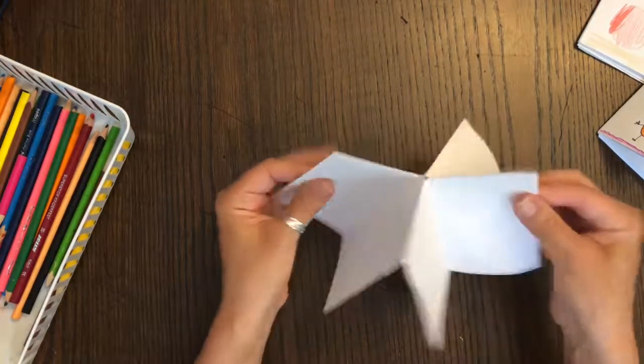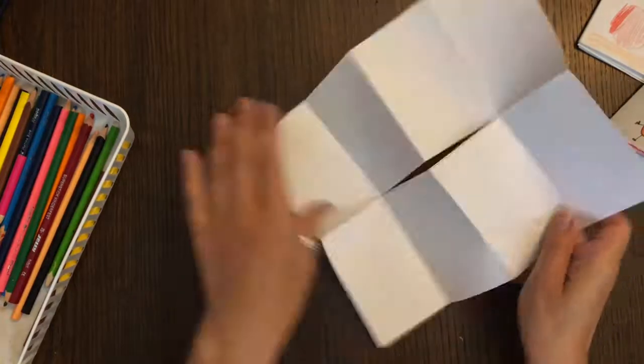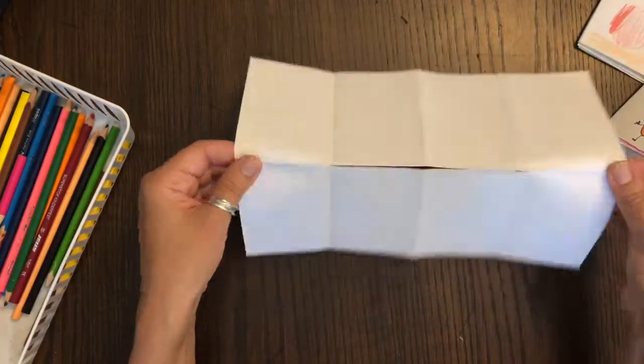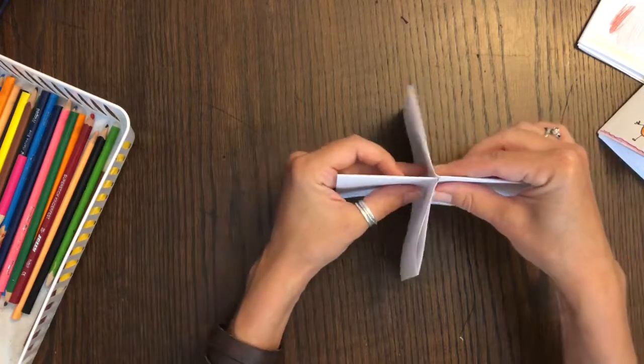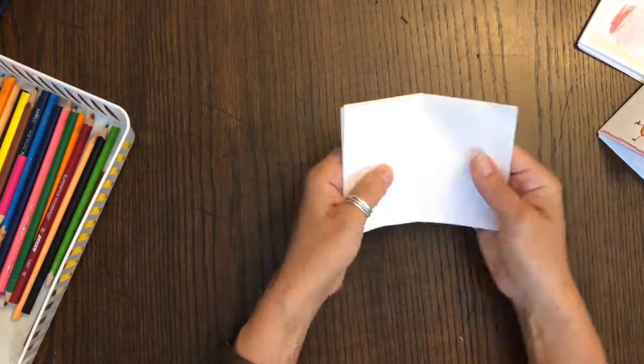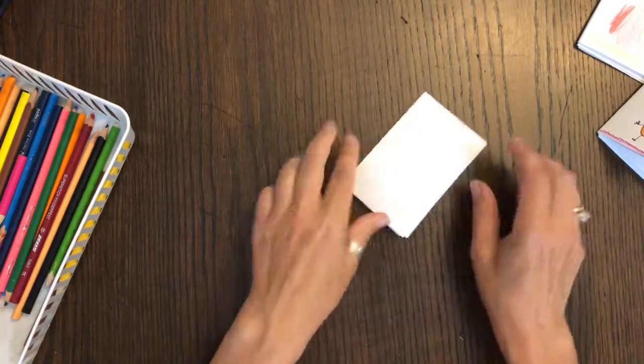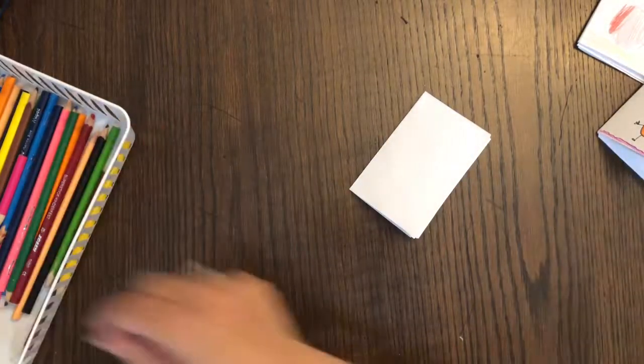I'm going to open this back up one more time and show you again in case you missed it. So take our paper, fold it in half and then press your hands together to make that diamond and then smush it down into the shape of your little book. Ta-da!